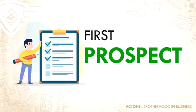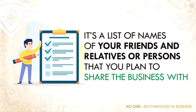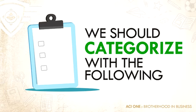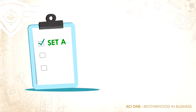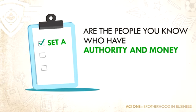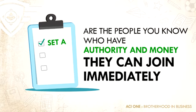First, you need to have the prospect list. This is a list of names of your friends and relatives, or persons that you plan to share the business with. We should categorize it with the following: Set A are the people you know that have authority and money — meaning, when they like the business, they can join immediately.